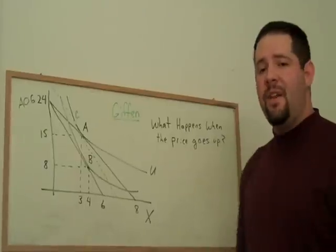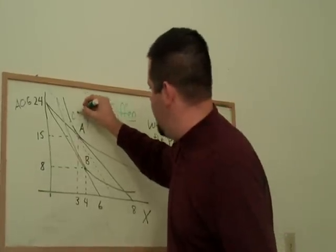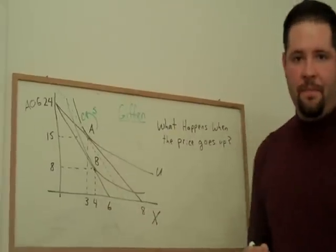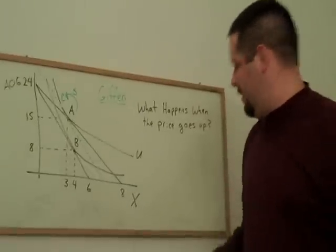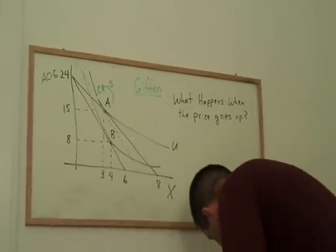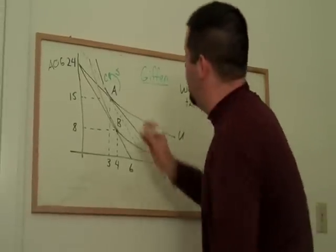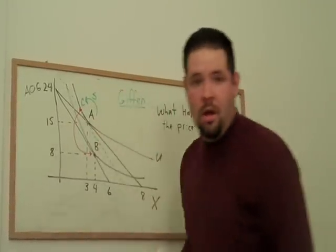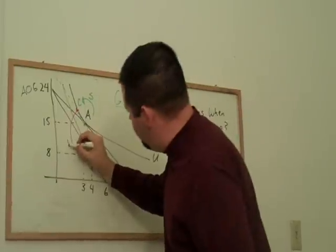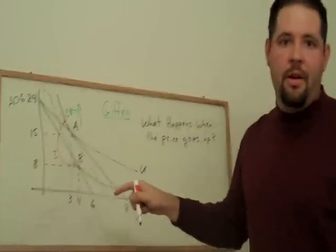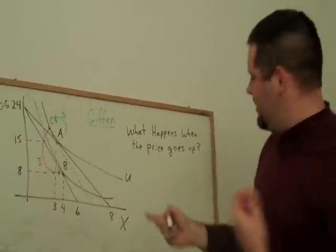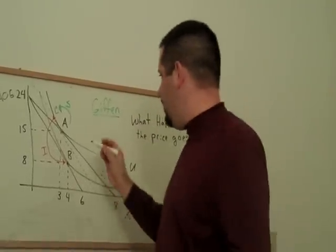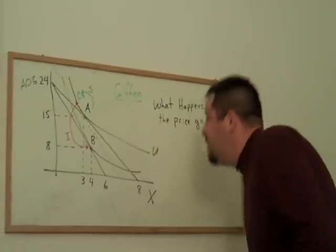Now, remember from the last video that this, from A to C, is our substitution effect, and the rest of that price effect is the income effect. So, we go from C all the way down here to our new optimal bundle, B. There's our income effect. So, let's actually bring it down to the axis and think about what happened here in terms of our income and substitution effects.